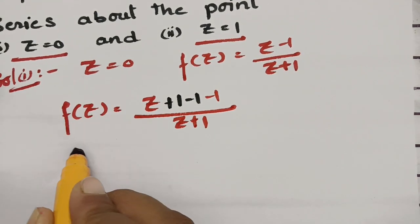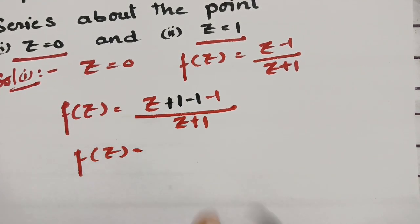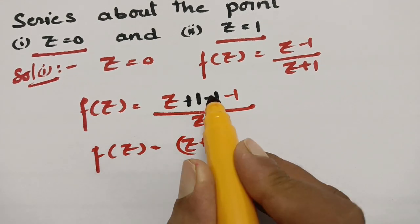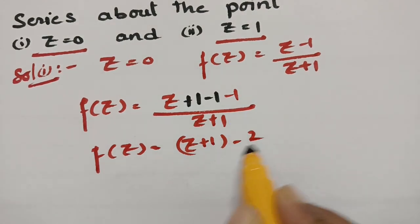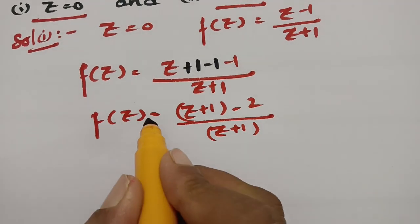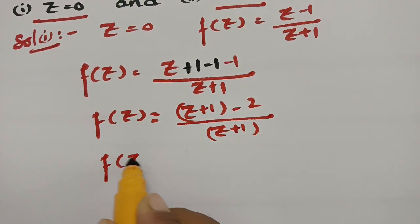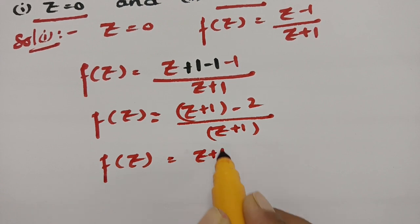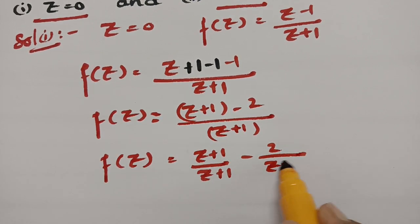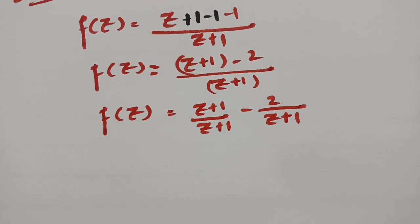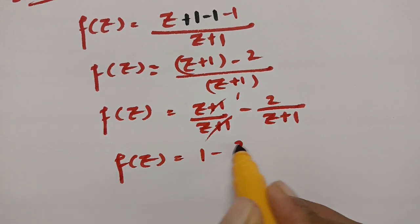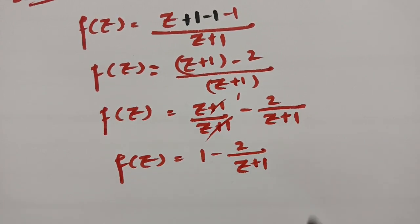Now f(z) can be written as: this value is (z+1) times minus 1, into minus 1, which gives minus 2, by (z+1). For expanding, I am dividing: (z+1)/(z+1) minus 2 times of 1/(z+1). If I cancel this for one time, f(z) is equal to 1 minus 2/(z+1).